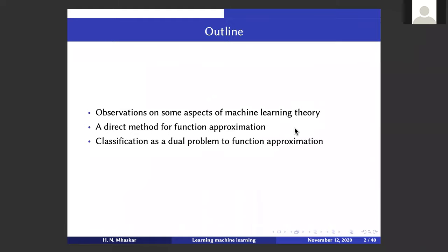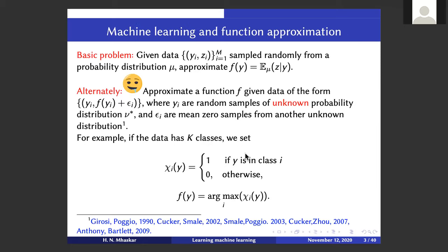Here is the outline of my talk. I want to give some observations first on classical machine learning theory. Then I want to present a new paper of mine about a direct method for function approximation on unknown manifolds. And then I want to talk about the classification problem, which I think is probably better handled as a dual problem to function approximation.